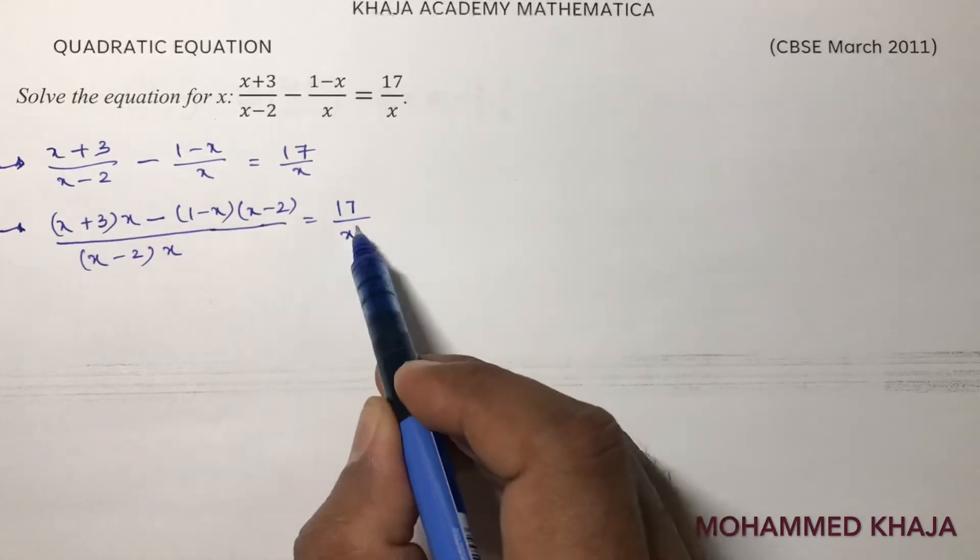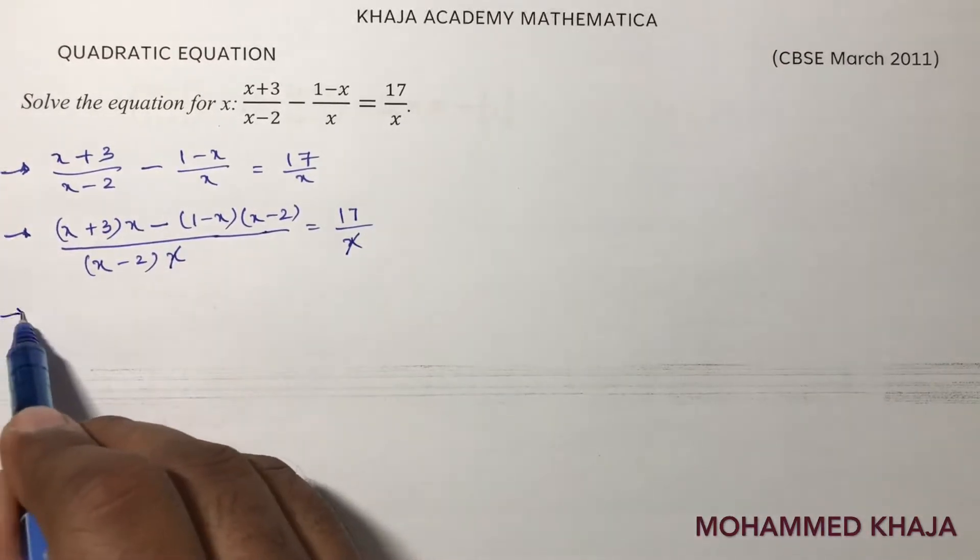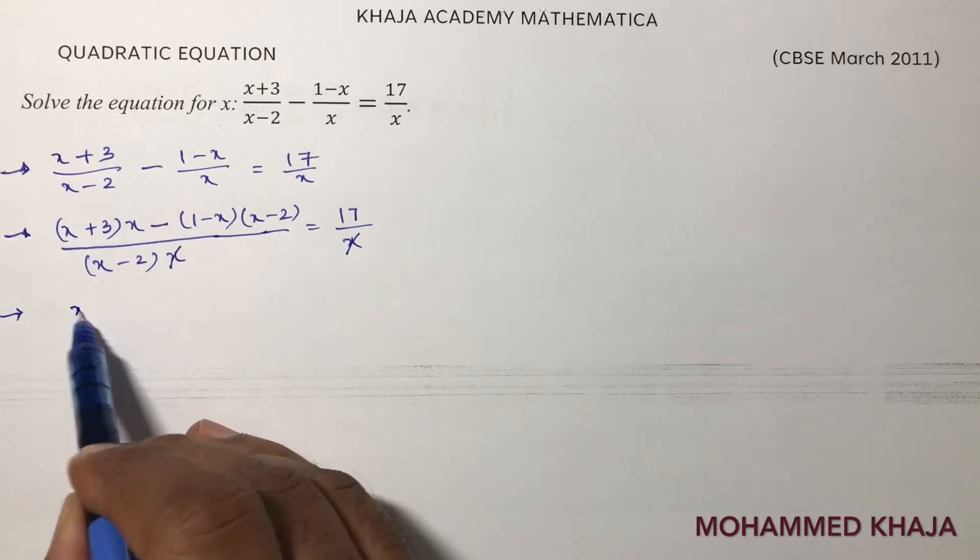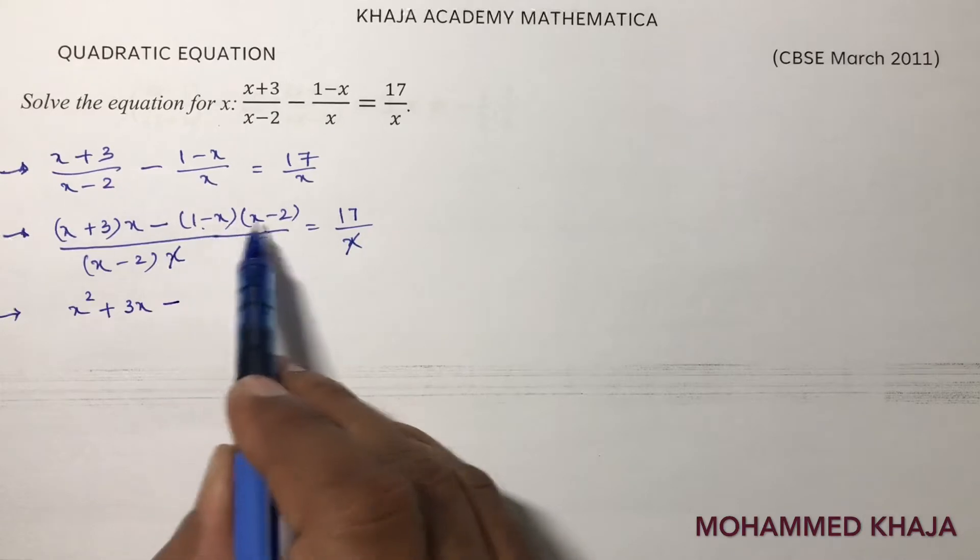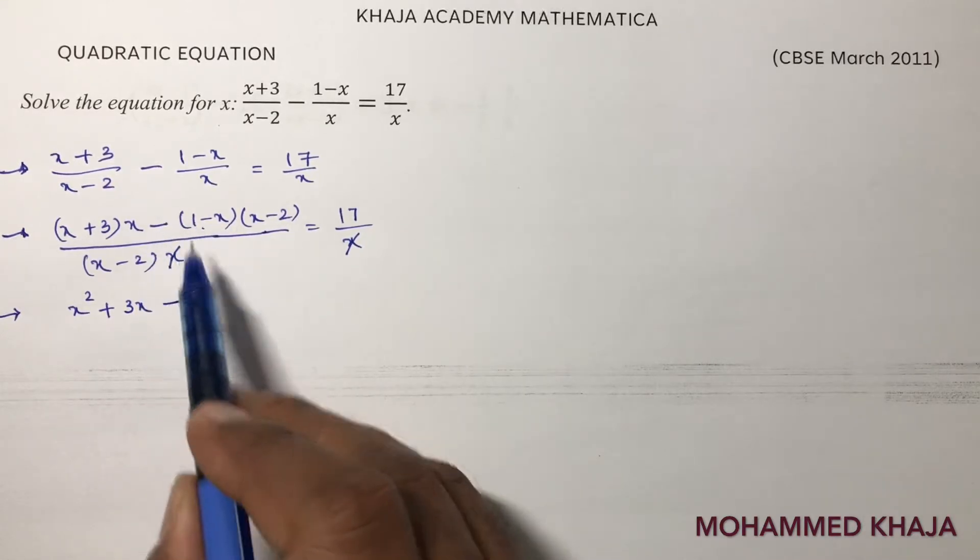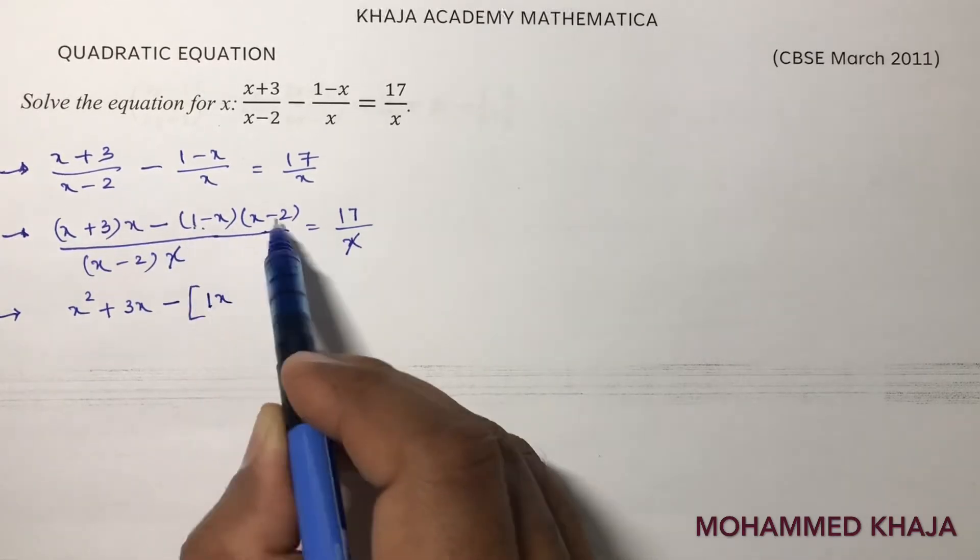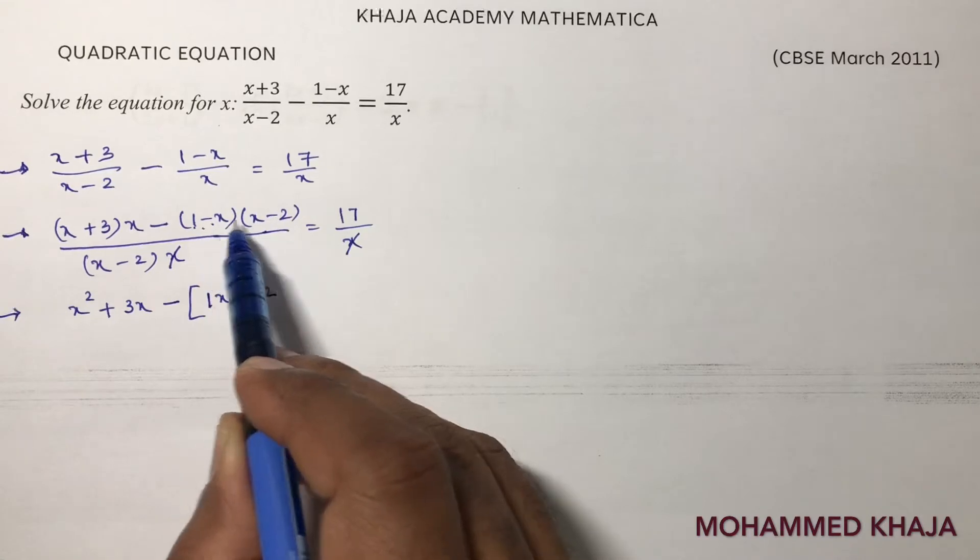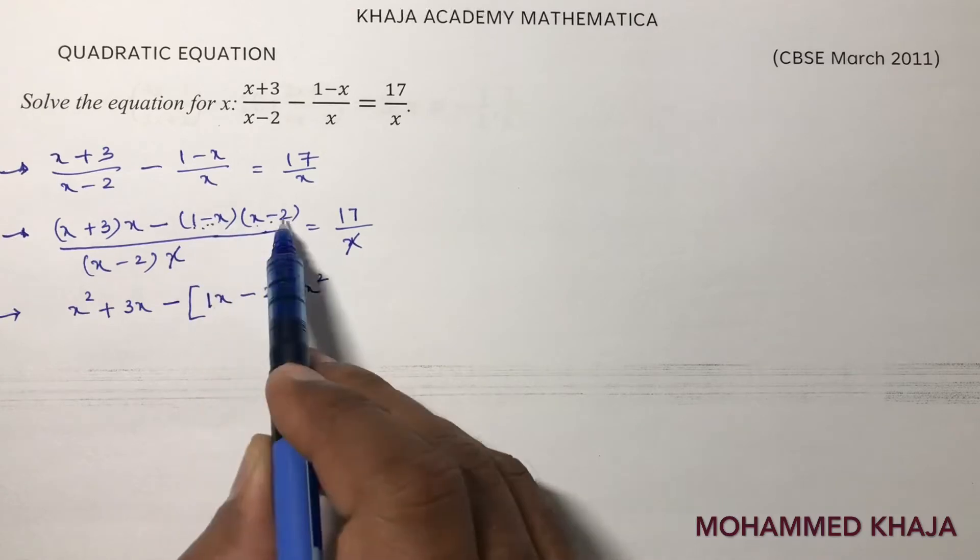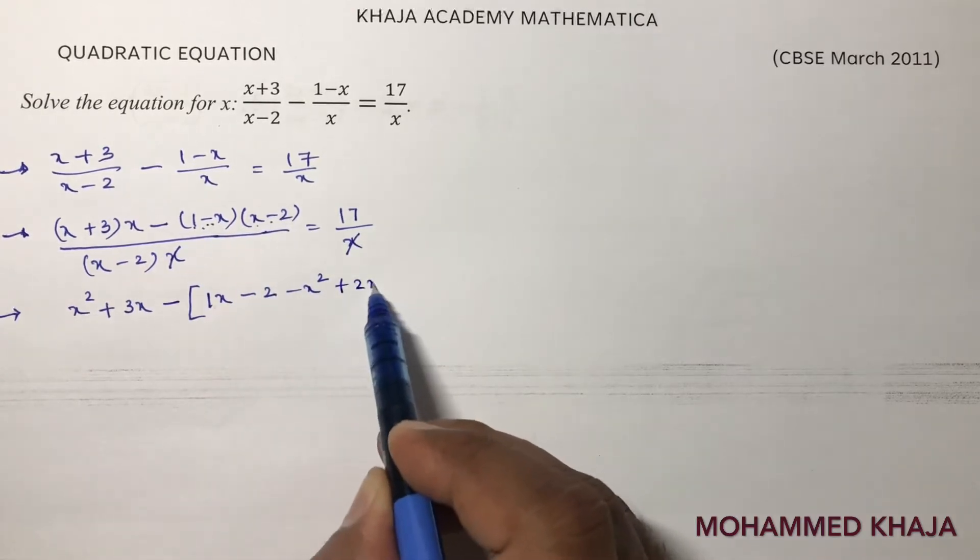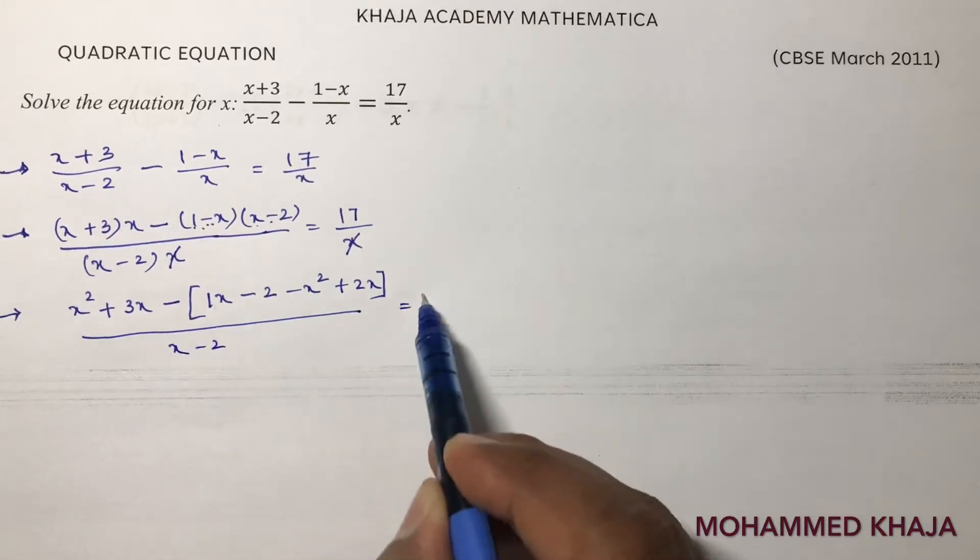See if you want, here x and x you can cancel in the denominator. Now here x into x is x square plus 3x minus - see first you multiply this then change the sign with minus. First take 1 into x, 1x. 1 into minus 2 is minus 2. Minus x into x is minus x square.